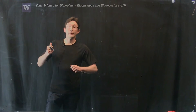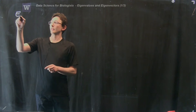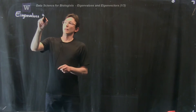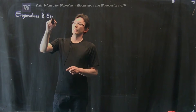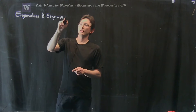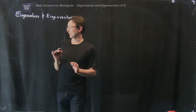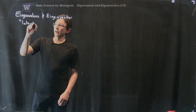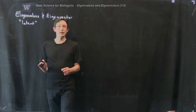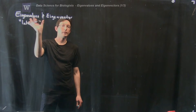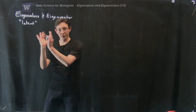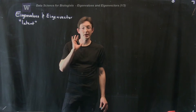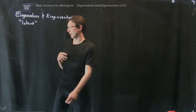Now we're going to talk about eigenvalues and eigenvectors. Eigen is a German word that means latent or characteristic. That's just a fancy way of saying that these are important values and important vectors — important numbers and important vectors associated with every matrix A that you're going to analyze.